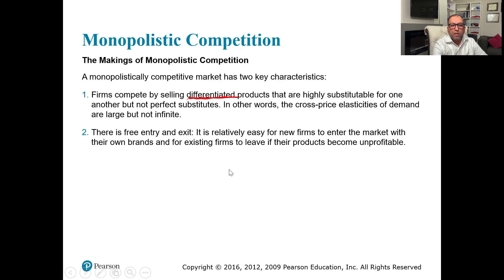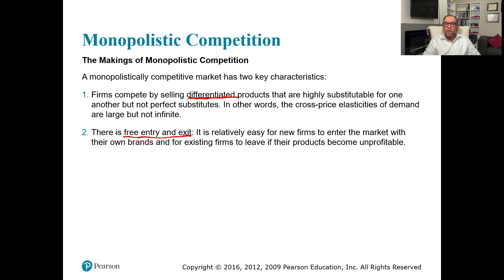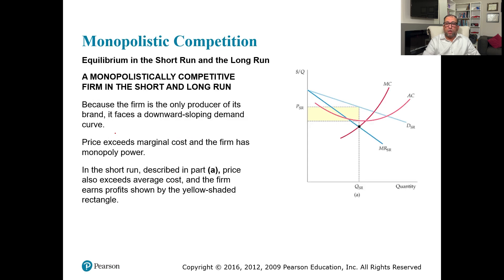The second characteristic of a monopolistically competitive market is free entry and exit. It is relatively easy for new firms to enter the market with their own brands, and for existing firms to leave if their products become unprofitable. Anyone can enter if they have the opportunity to make profit, and firms whose products are no longer in demand can leave. How much quantity each firm produces depends on the demand function or marginal revenue function of that market.